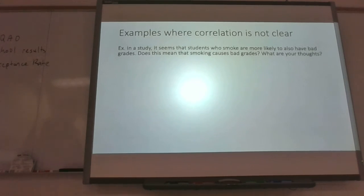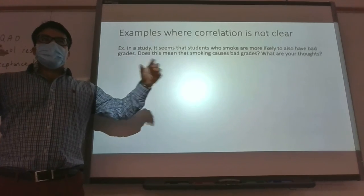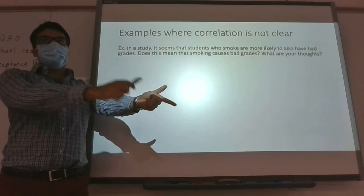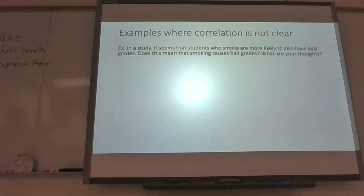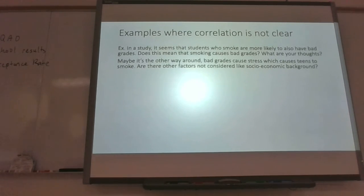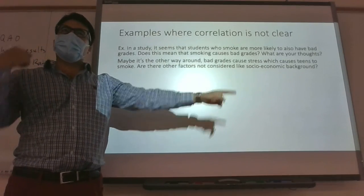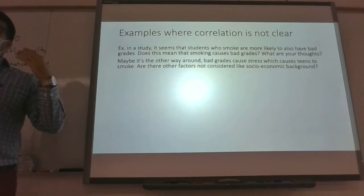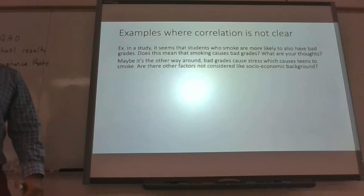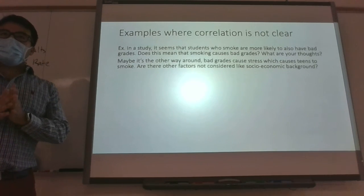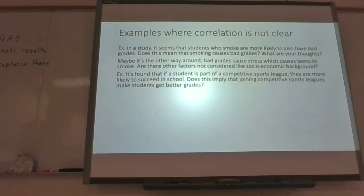We also have to consider socioeconomic factors — we don't know the demographics of the students who smoke, and there may be other reasons they're smoking that go hand in hand with grades. So with causal relationships, we're not even sure of all the missing factors. We have to consider all external variables — a lurking variable we didn't even think about could be the real driver, and the relationship we assumed was causal might actually run in the opposite direction or be explained by something else entirely.